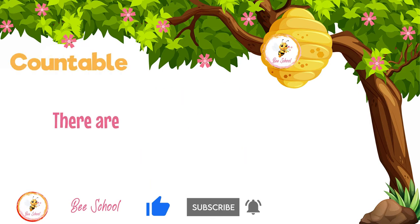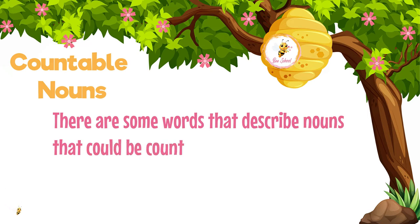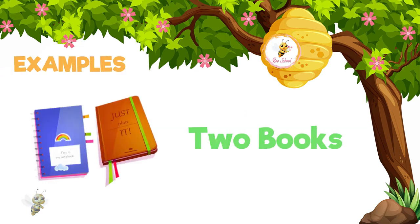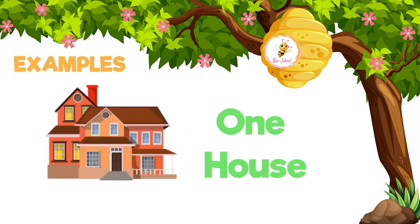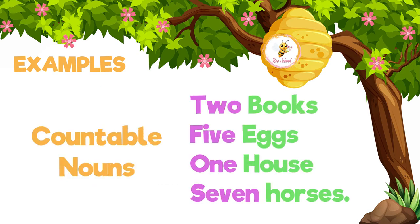First, let us see what are countable nouns. The countable nouns are the nouns that can be counted. Two books, five eggs, one house. You would have noticed that we can add a number in front of these nouns. Therefore they are called countable nouns.